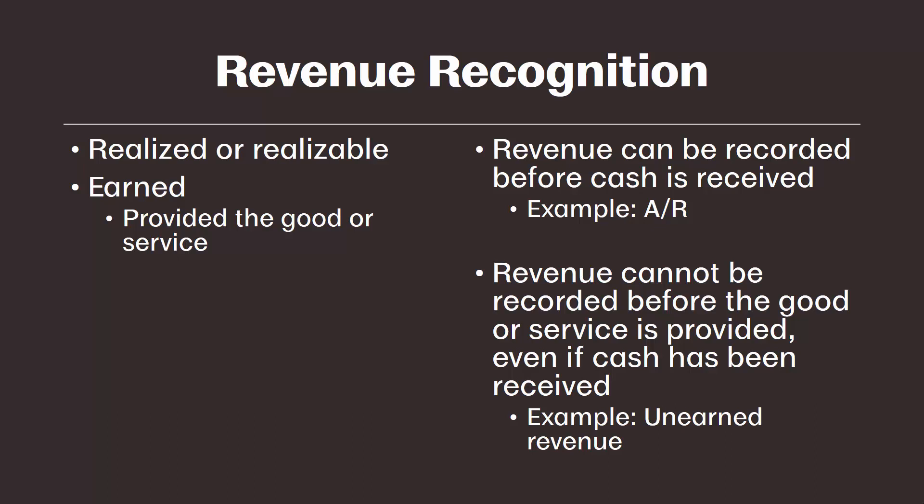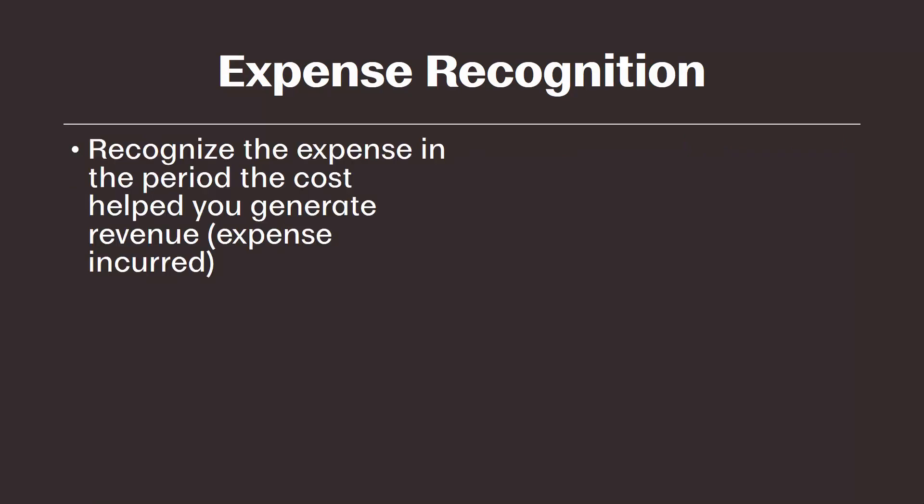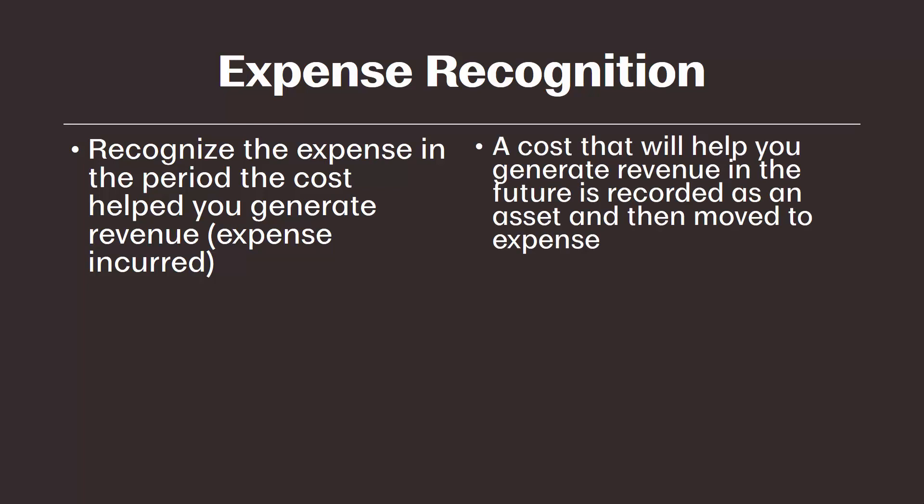Let's move into rules around recording expenses. Expenses should be recorded in the period they help us generate revenue. This is when we say the expense is actually incurred and can be recorded on the income statement. It is critical to remember what we need to do if we incur a cost that will help generate revenue in the future. As we learned in the videos covering assets, we need to record costs that will benefit us in the future as an asset and then move them to an expense over time.